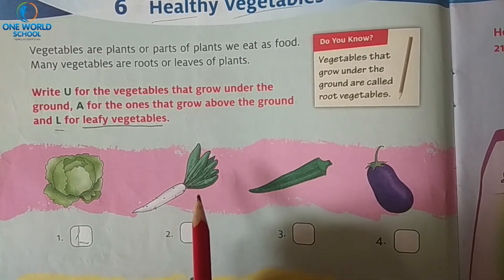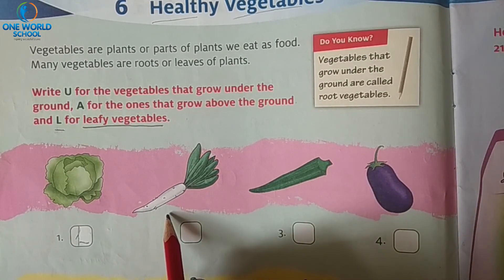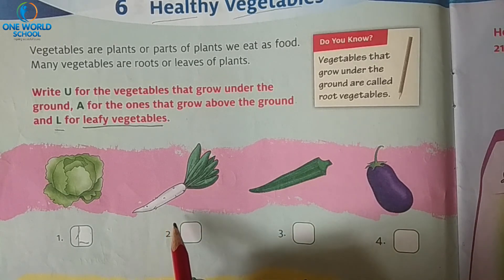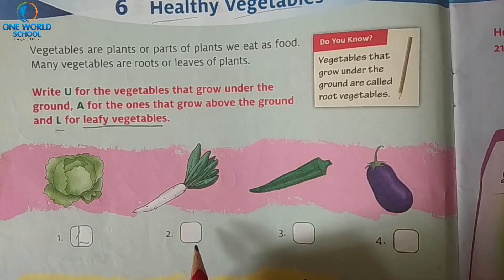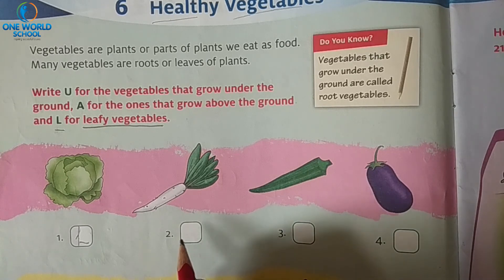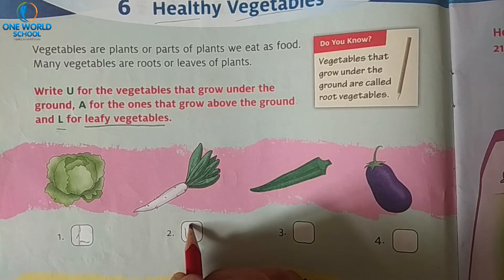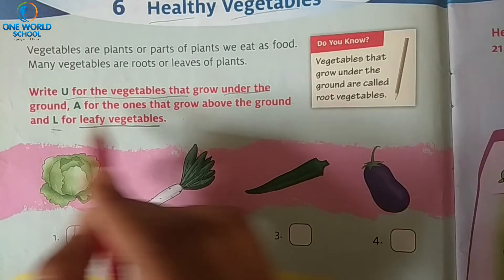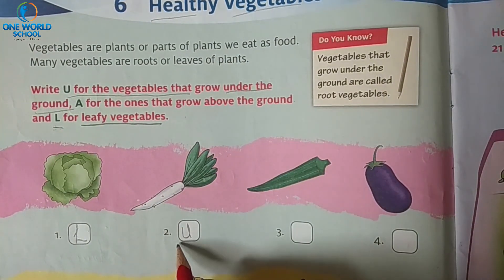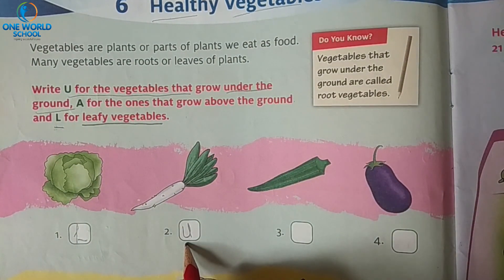Number two is radish. Jaisi ki maine aapko bola, radish and carrot ek root hai — root matlab the plant which grows under the ground. Yeh under the ground wale vegetables hain. Toh hum idhar kya likhenge? U, because it grows under the ground. Isliye humne idhar kya likha? U. Very good.